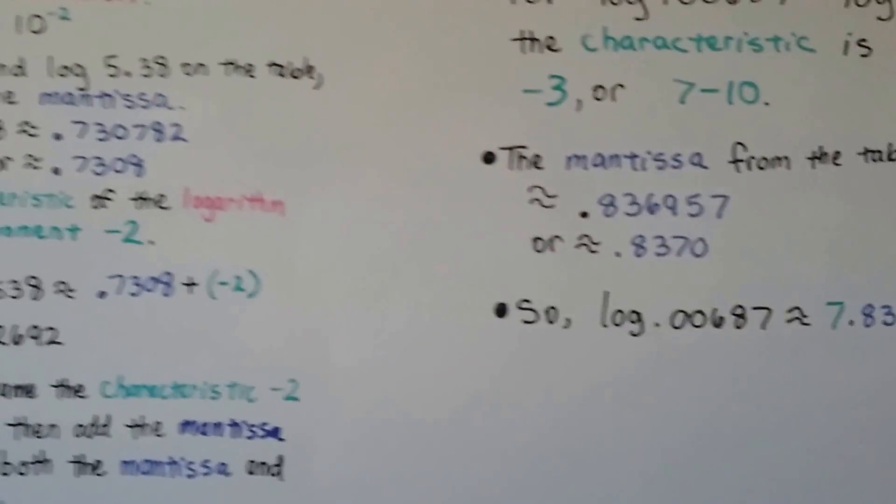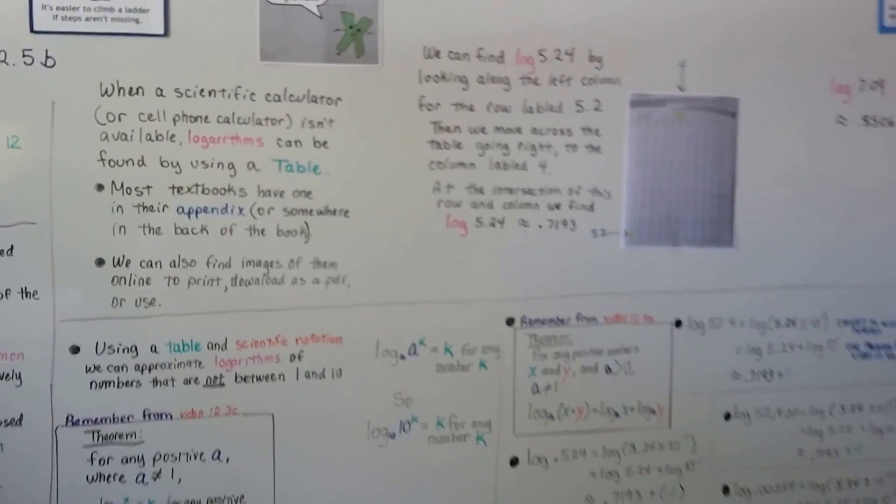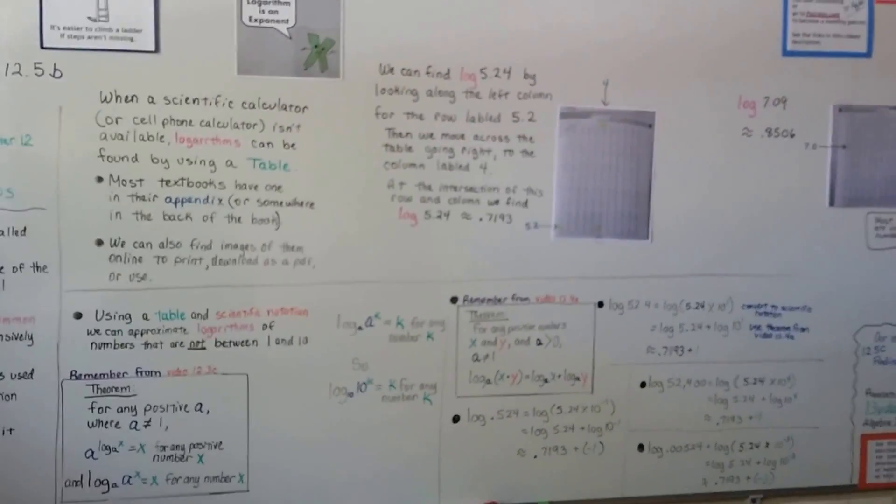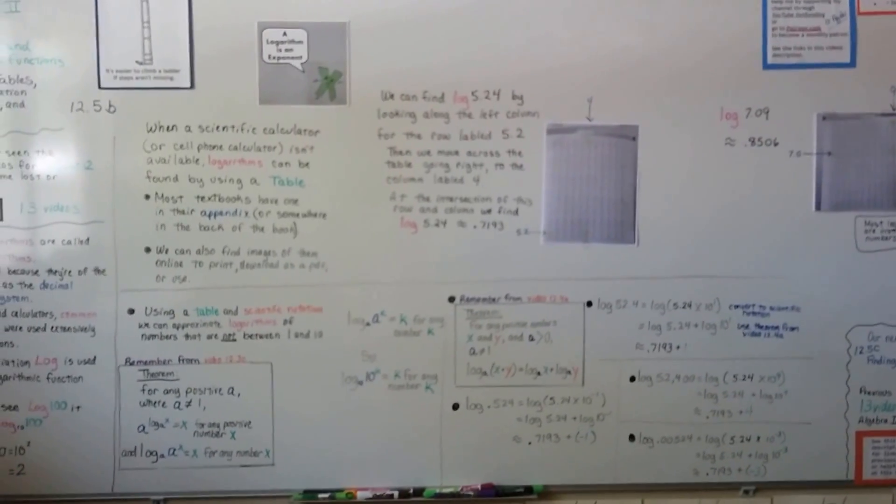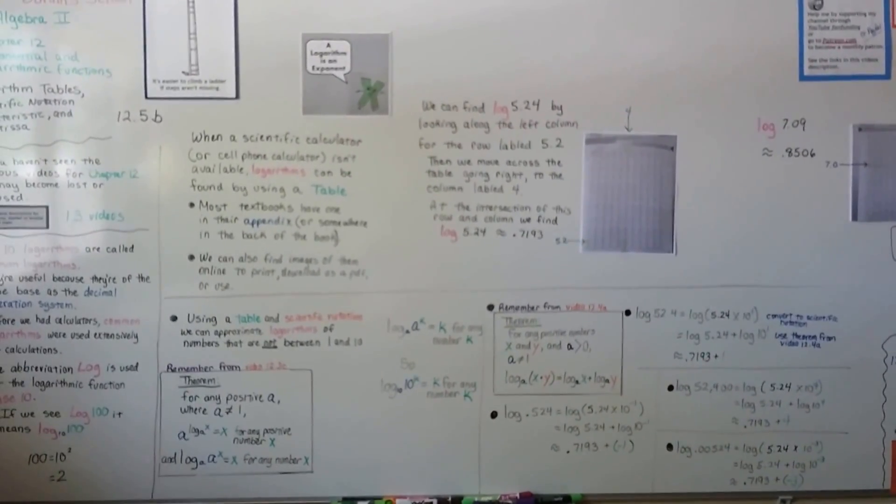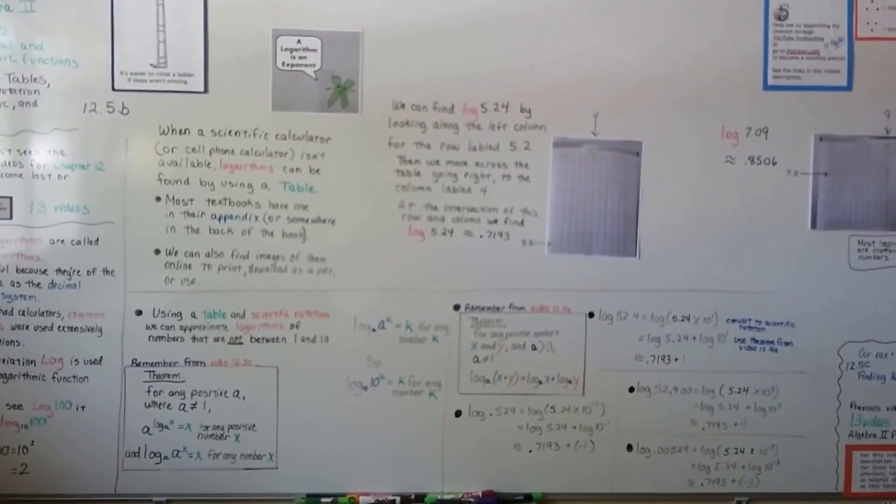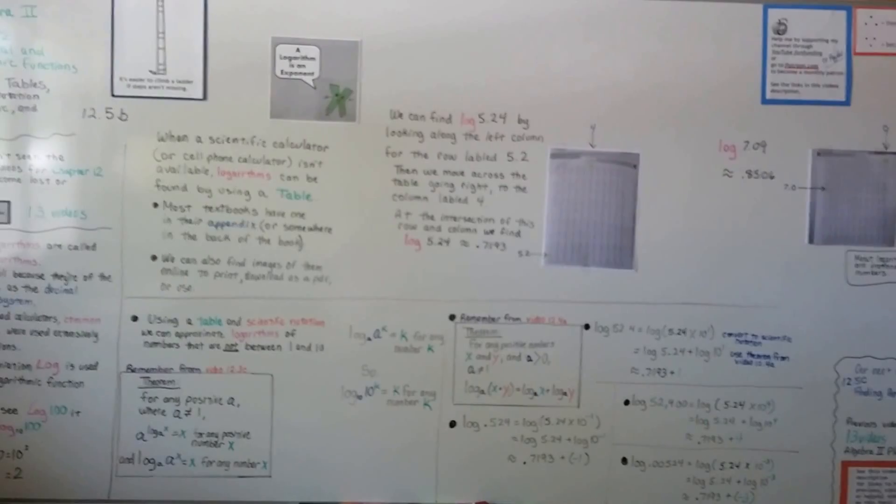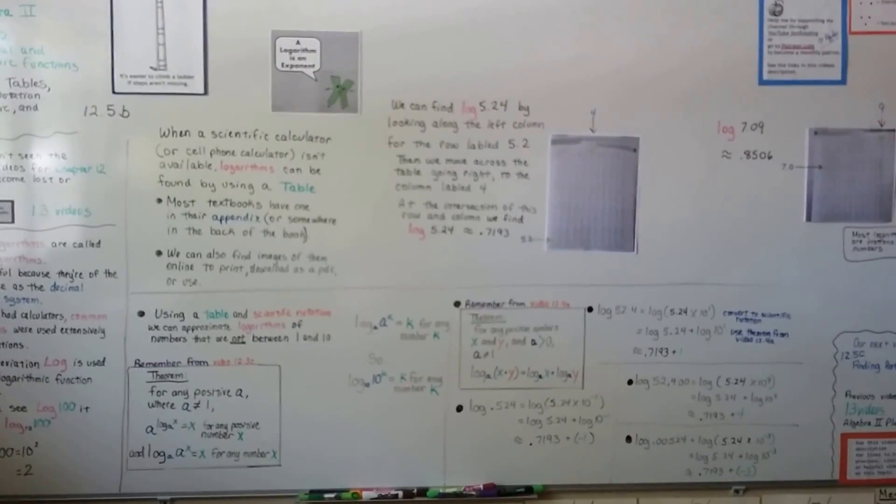So that's using a log table. You can even multiply using them. There's other things that you can do with the log table. I just wanted to show you how to do it basically. And we're going to continue talking about logarithms. We're going to find anti-logarithms in the next video. We've got 13 previous videos that are going to be linked in the description. And I'll see you in 12.5c. Bye.